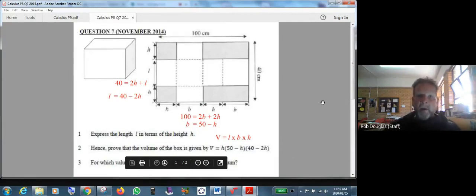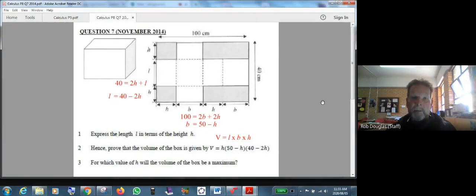Okay, we're going to take a look at an optimization problem looking at a box, and this question is question 7 from November 2014. So what you're given is you're given that it's a box, and they gave you a whole bunch of things here. They're saying we're going to take a big rectangular piece of paper.